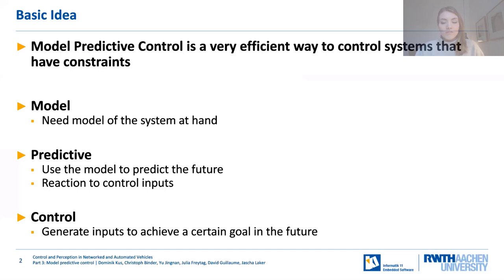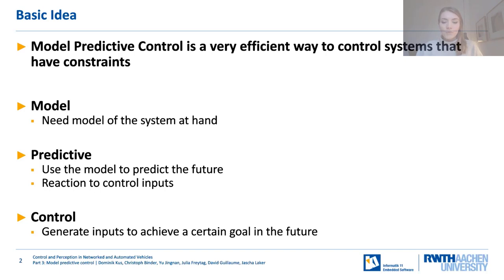In almost every system we have constraints, and those constraints represent limits on the system itself and its inputs. For example, a level must not overflow — that is a constraint on the output — or constraints on temperature that are not supposed to exceed. MPC has a very efficient way to handle those systems that have constraints. We solve those problems with an optimal control approach. The general goal of MPC is to use a dynamic model to predict future system behavior by expecting its future states in terms of control inputs, and we optimize those inputs over a finite time prediction horizon.